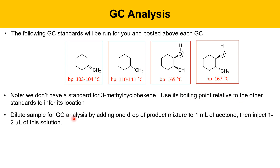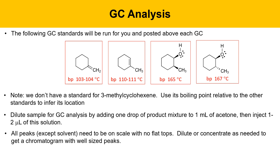Dilute your sample for GC analysis by adding one drop of the product mixture to one milliliter of acetone, then inject one to two microliters of that solution. We dilute the sample because it's too concentrated in pure form. All peaks except acetone need to be on-scale and not have flat tops. If they're off-scale, the sample is too concentrated and needs further dilution; if peaks are too small, concentrate the sample.